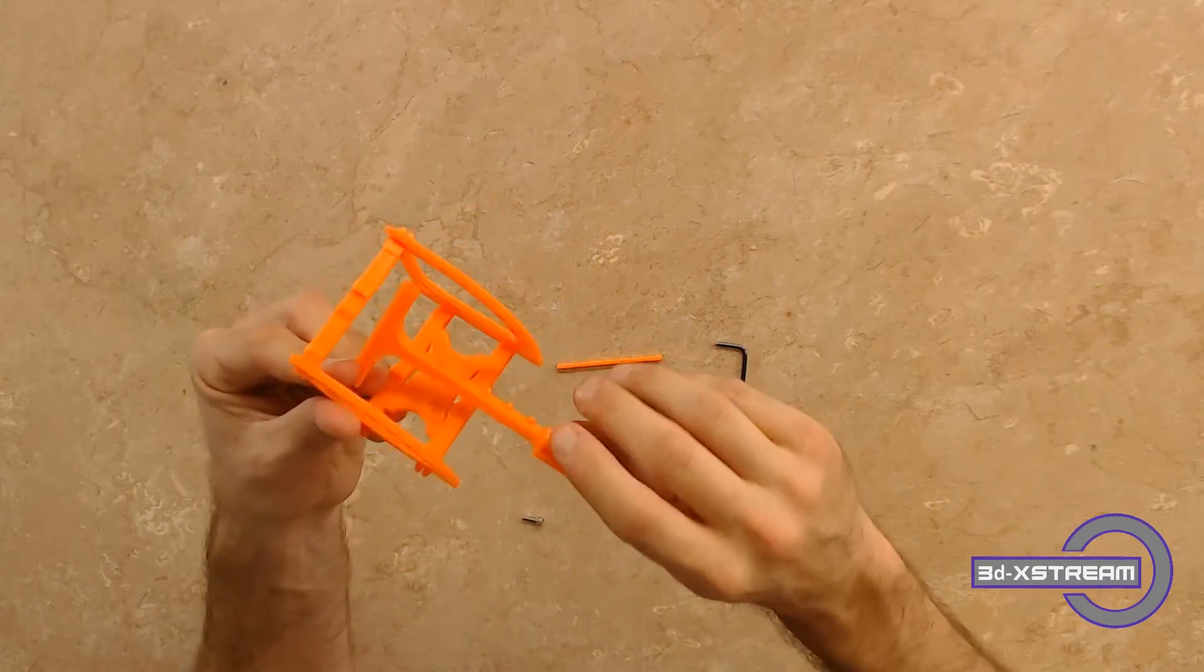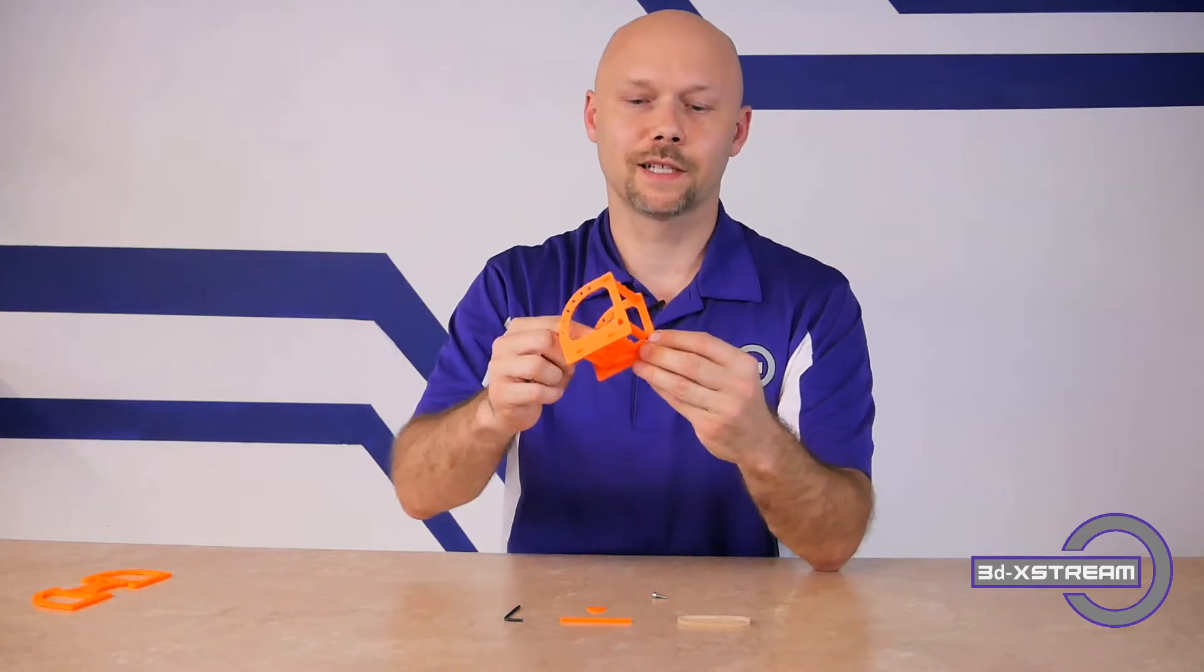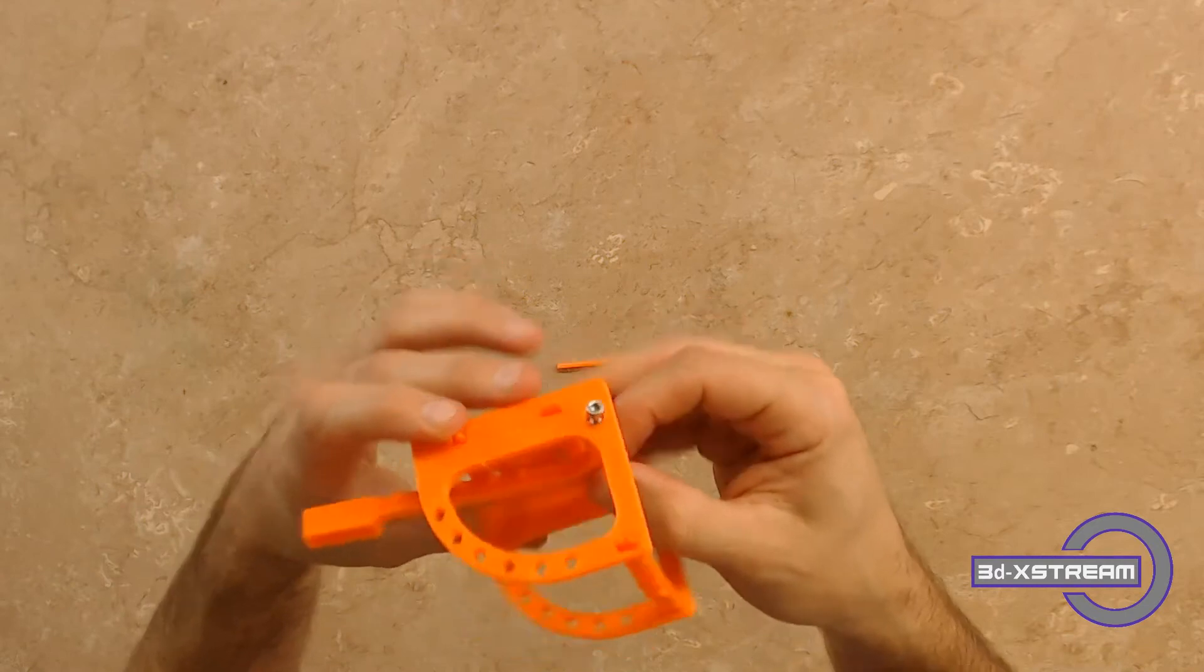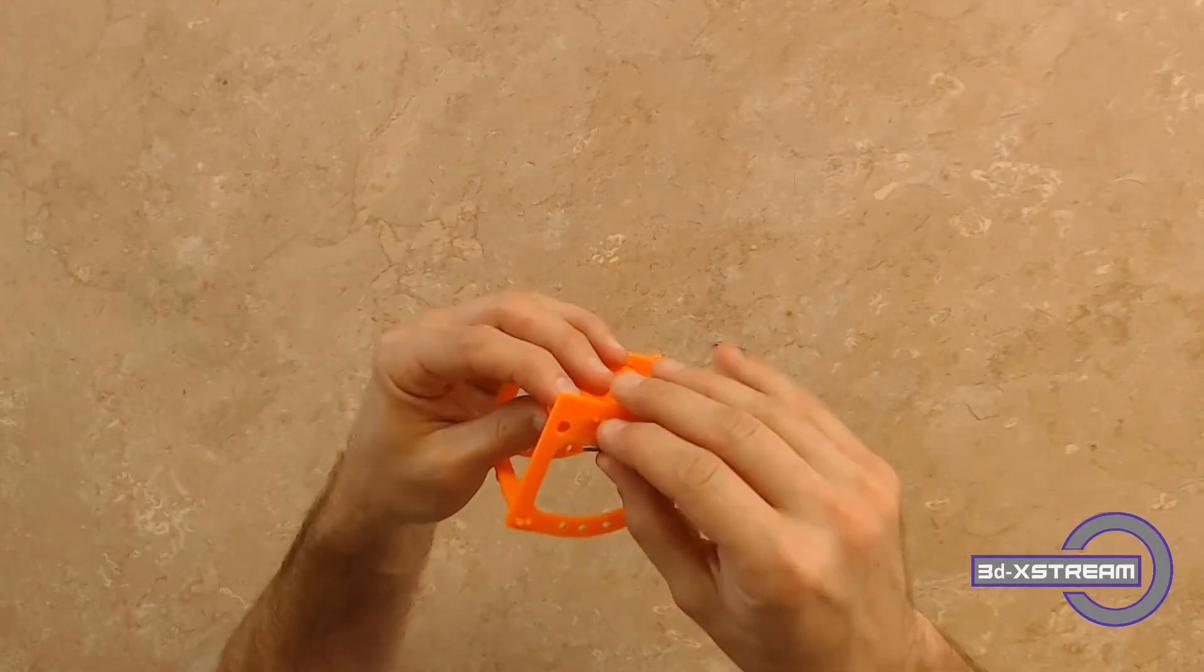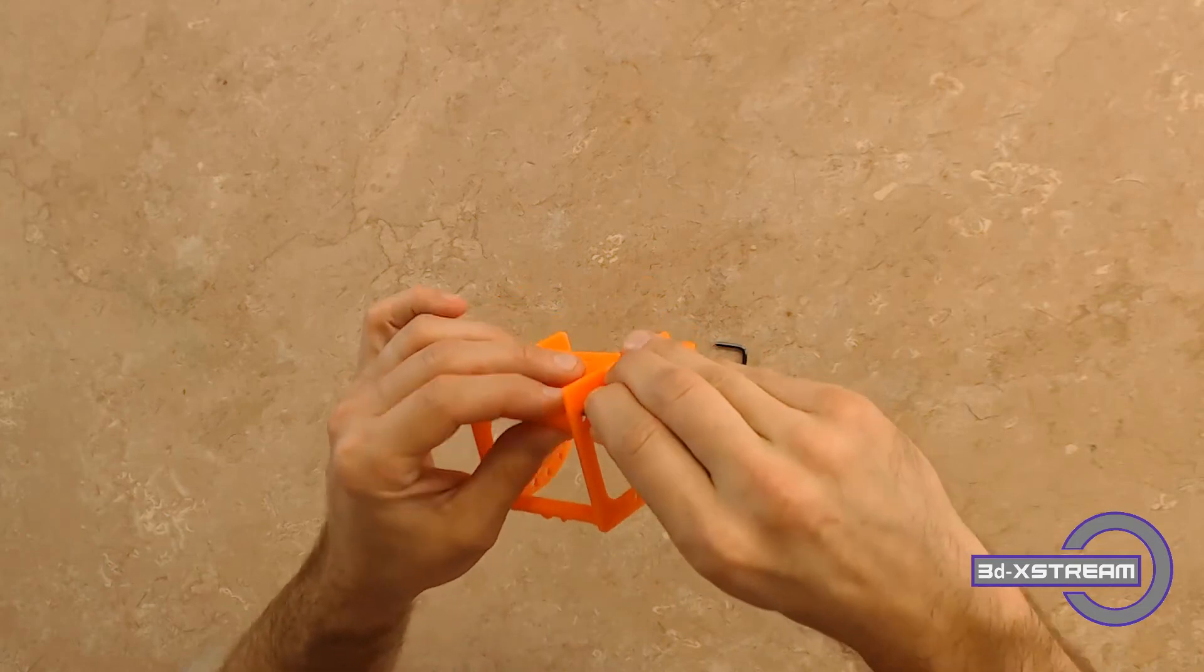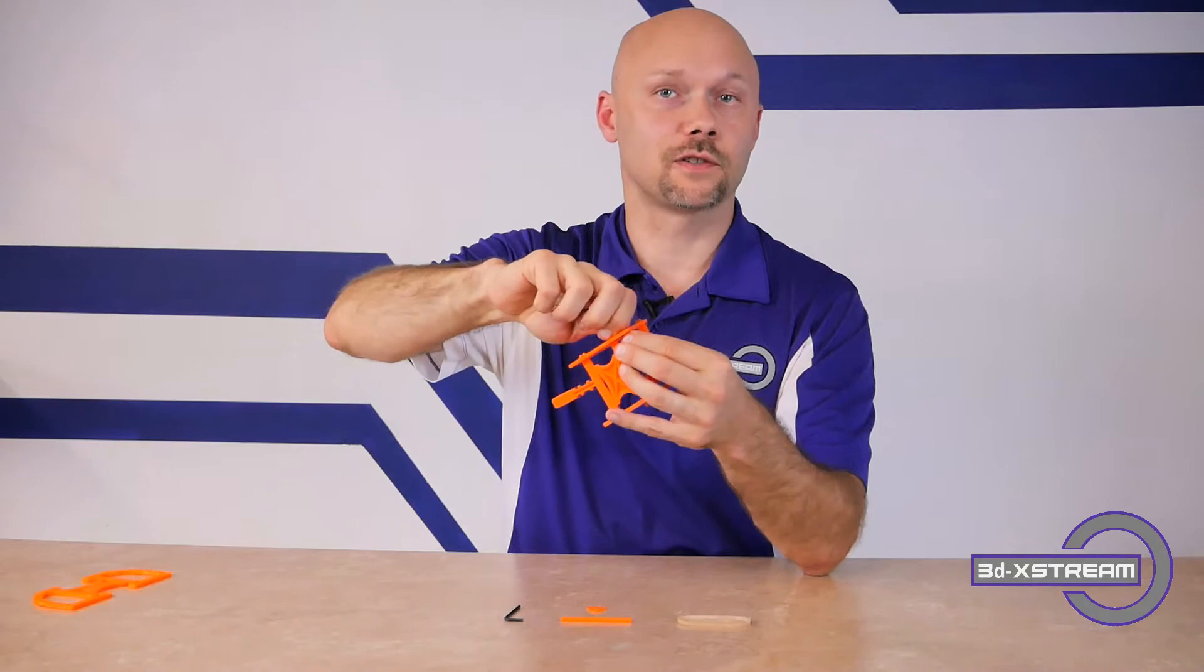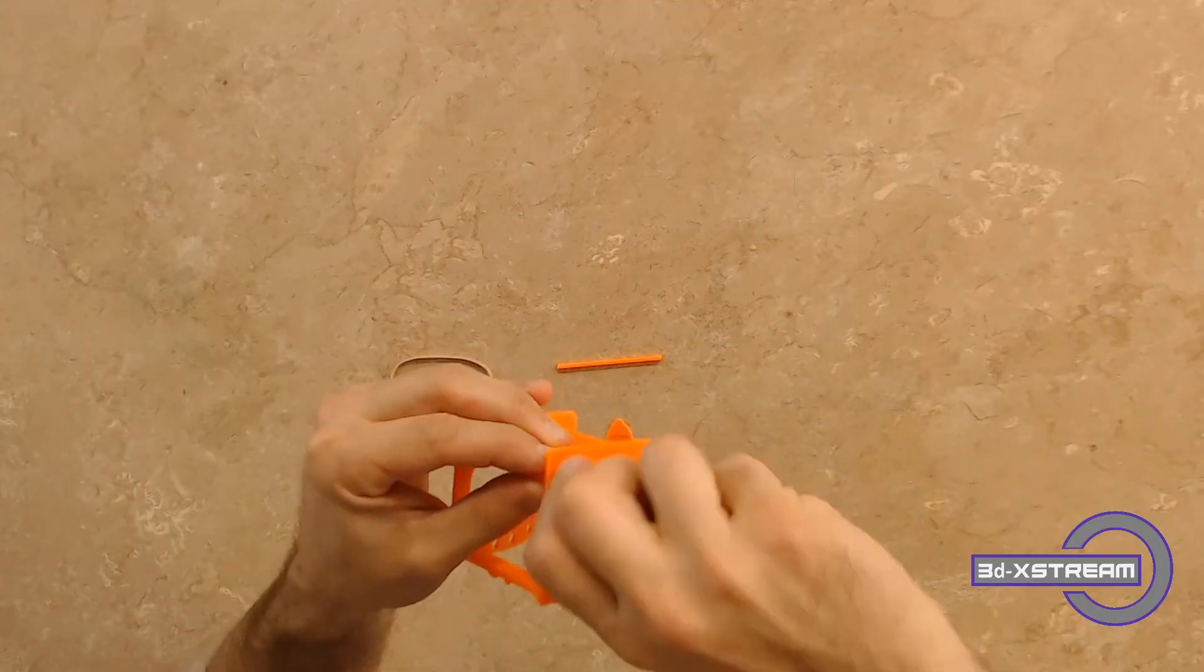Now make sure when you do this that you have the hole facing up in the throwing arm and not down because that's actually going to hold the object that you're going to throw. So as you can see it pops right into one side and of course we're going to do the other side with the bolt. It's a little tricky at first to kind of get these things started. Now yours may be a little looser and that's okay if you can just do it by hand.